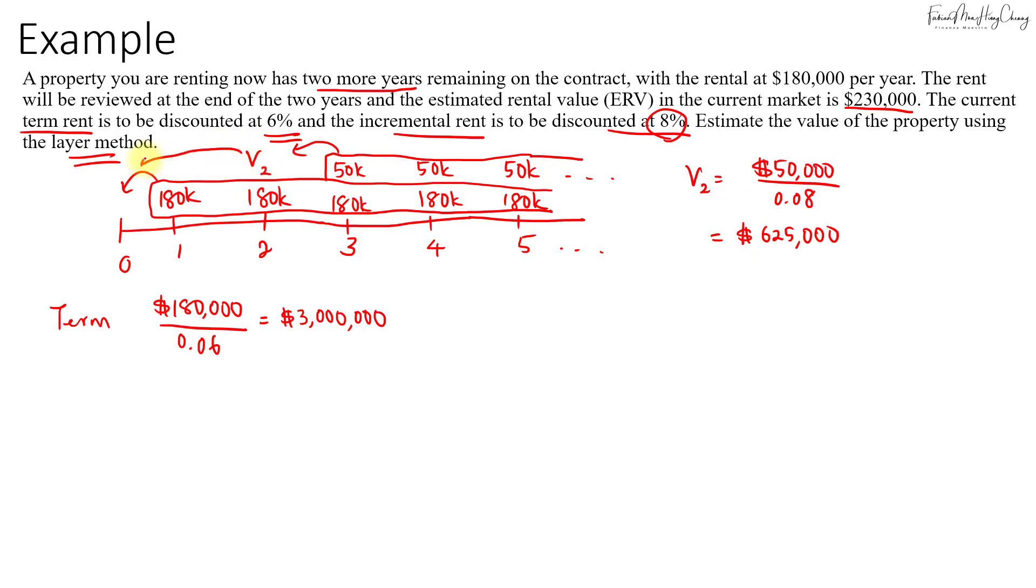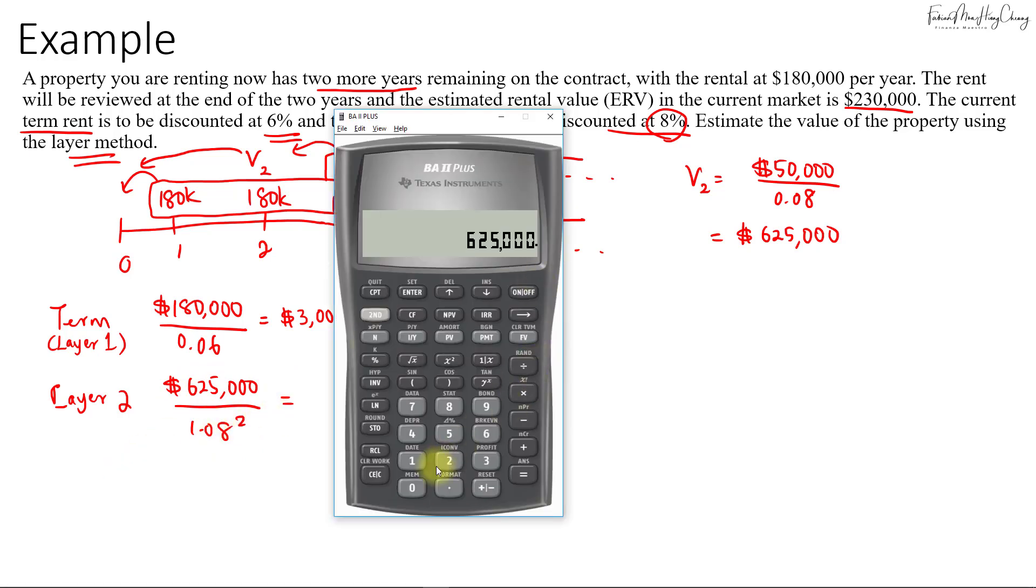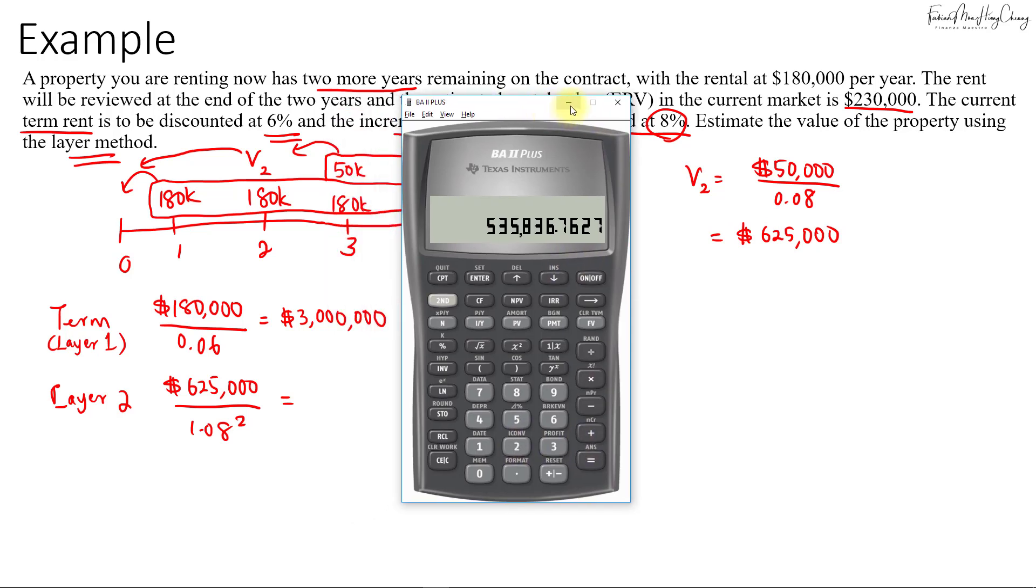This amount would then need to be discounted back to year zero as well. This is layer one, and for layer two, which is the incremental layer, we will take $625,000 discounted back at 8% for two years. That would be $625,000 divided by 1.08 to the power of two, which equals $535,837.